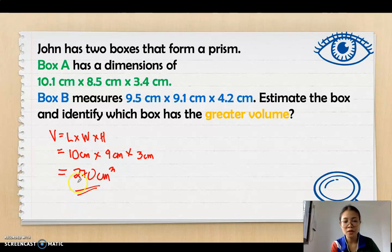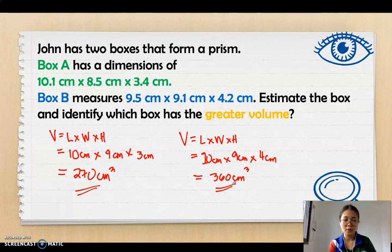Box A measures 270 cubic centimeters. For box B, volume equals length times width times height. For the length, it's 9.5, so when you round it off, it becomes 10. 10 centimeters times 9.1 is 9 centimeters times 4.2 equals 4 centimeters. When you multiply that, 10 times 9 times 4 is 360 cubic centimeters. Box B has a volume of 360 cubic centimeters. So, it's very obvious that the greater volume is box B.